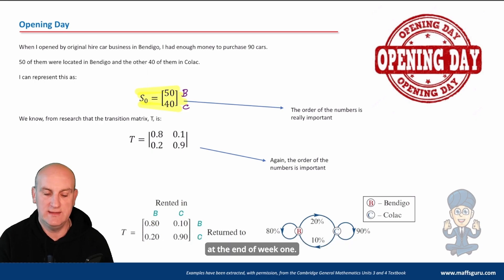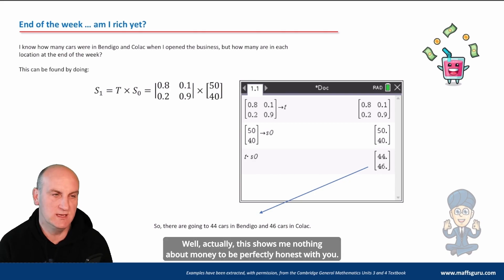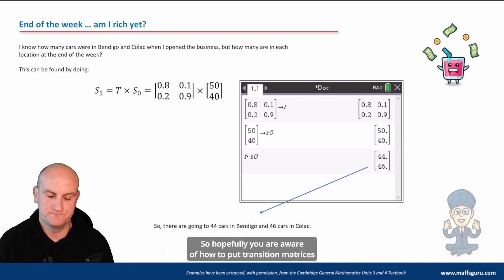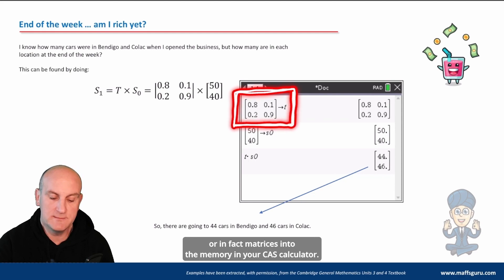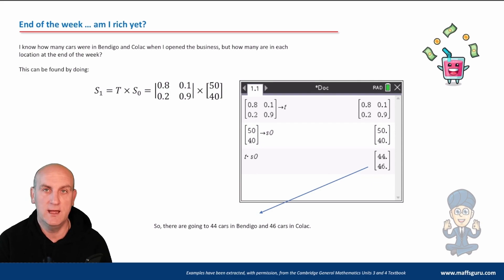How do we do that using our calculator? I'm in the money. Well, actually this shows me nothing about money to be perfectly honest with you, but it's going to tell me where my cars are. So hopefully you are aware of how to put transition matrices, or in fact matrices, into the memory in your CAS calculator. What you can see here is I've used a screenshot for the TI-Inspire. I'm fairly sure it's fairly similar for the Casio ClassPad, so hopefully you'll be able to just follow along.